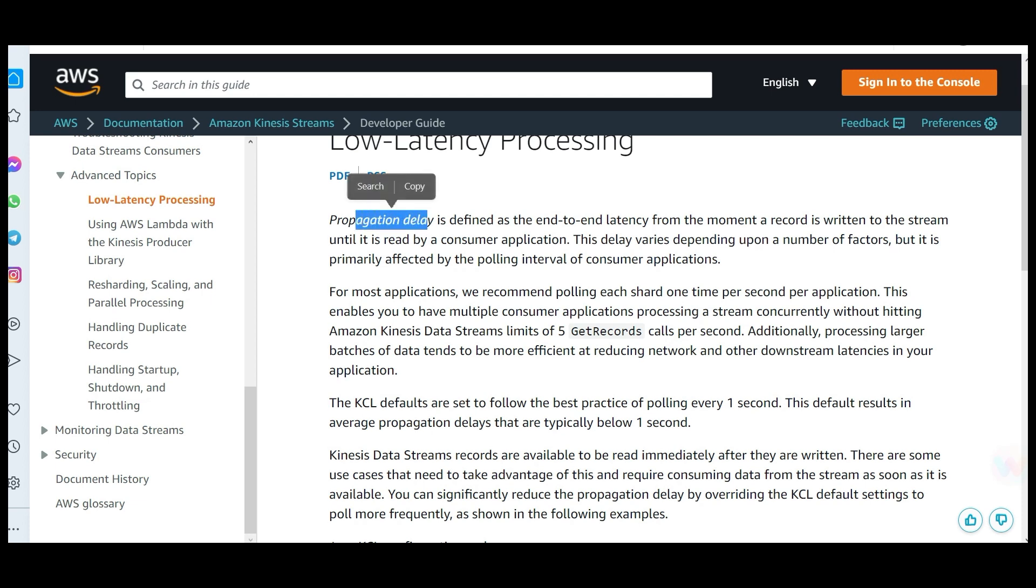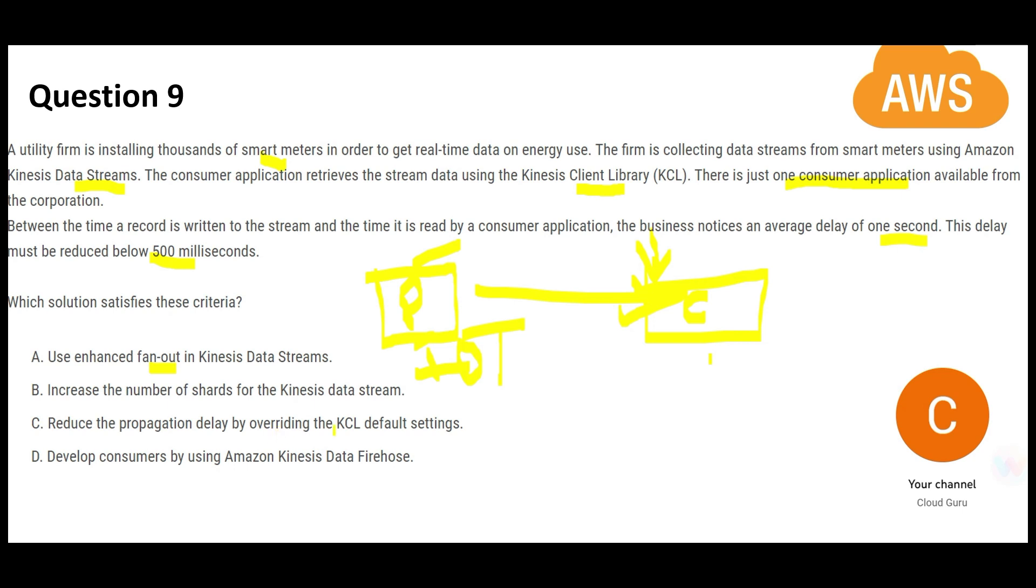In KCL configuration, this is the setting: ideal time between reading millis. We will make this to 500 instead of 250—that will become 500 milliseconds. In case you are not sure what propagation delay is, this is the definition: it is defined as the end-to-end latency from the moment a record is written to when it is read by the consumer application. If you are sending a package from point A to point B, propagation delay is the time it takes to move the package from point A to point B. In this case, C would be the answer because this is talking about reducing the propagation delay by overriding the KCL default settings, just like I showed you.